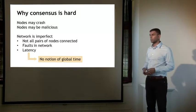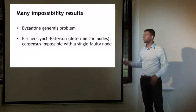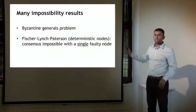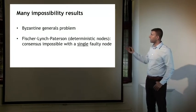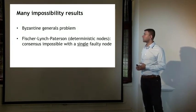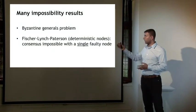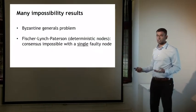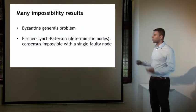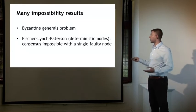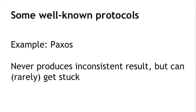Because of these constraints, much of the literature on distributed consensus is pessimistic and many impossibility results have been proved. One well-known result is the Byzantine generals problem. A more subtle one, known by its authors' names, is the Fisher-Lynch-Patterson impossibility result, which proves that consensus is impossible even with a single faulty process under certain conditions including deterministic node behavior. Despite these results, there are well-known protocols — Paxos being one of the better known — which make compromises: they never produce an inconsistent result but can get stuck and fail to make progress under rare conditions.